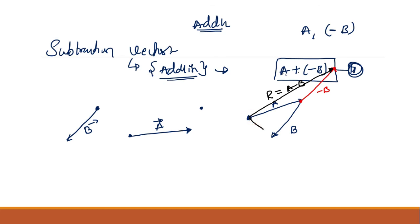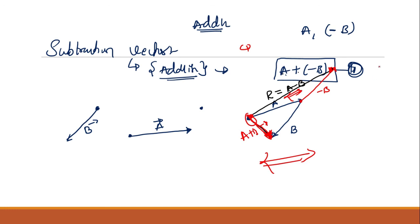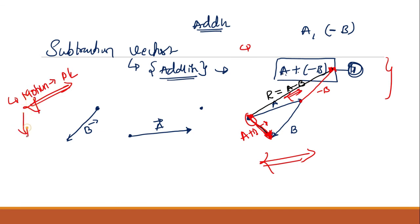So here, A plus B gives one resultant and A minus B gives another. The head-to-tail method applies for both addition and subtraction graphically. This was our topic for today's class — graphical method of vector addition and subtraction is now clear. We will discuss the remaining topics tomorrow, continuing motion in a plane. Please forward this video to your friends, ask them to subscribe, and don't forget to like the video. Thank you for watching.